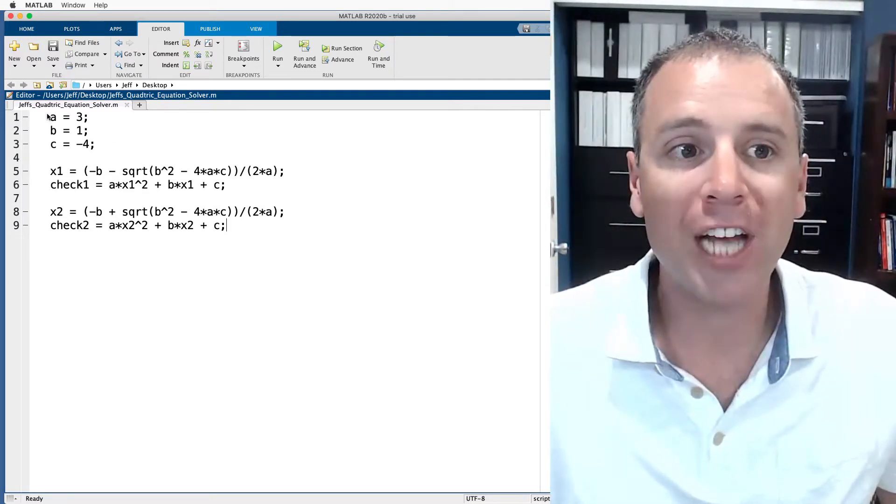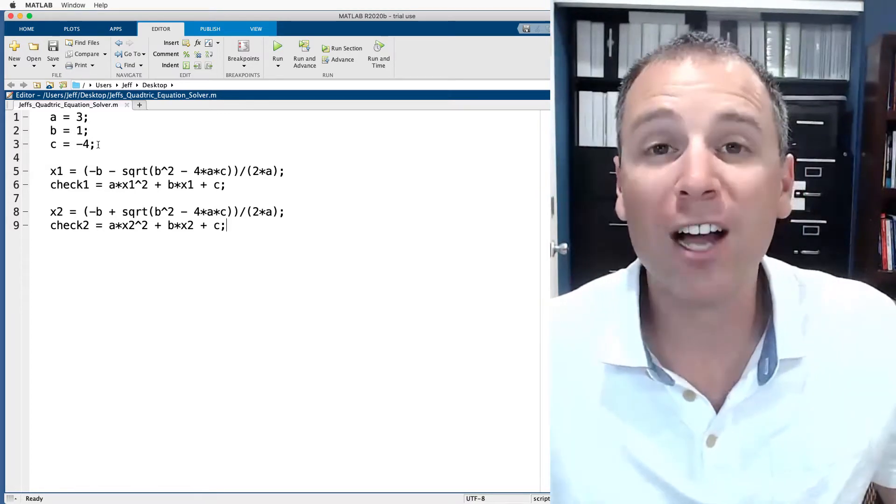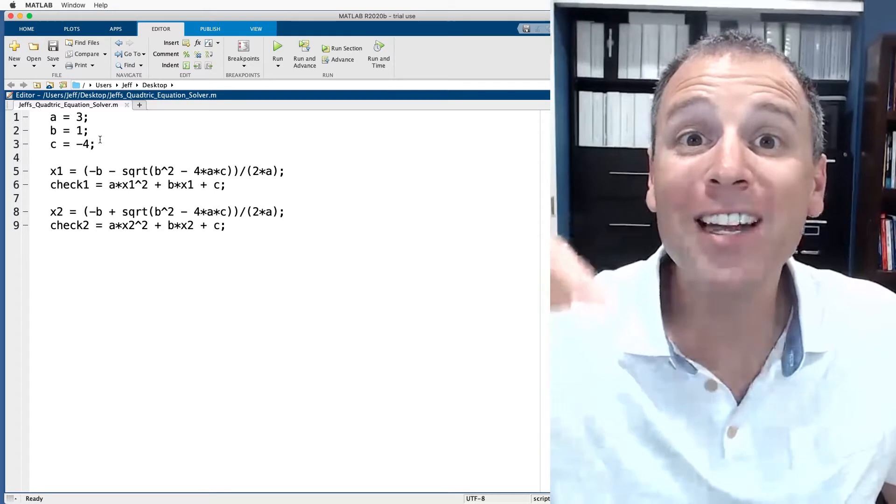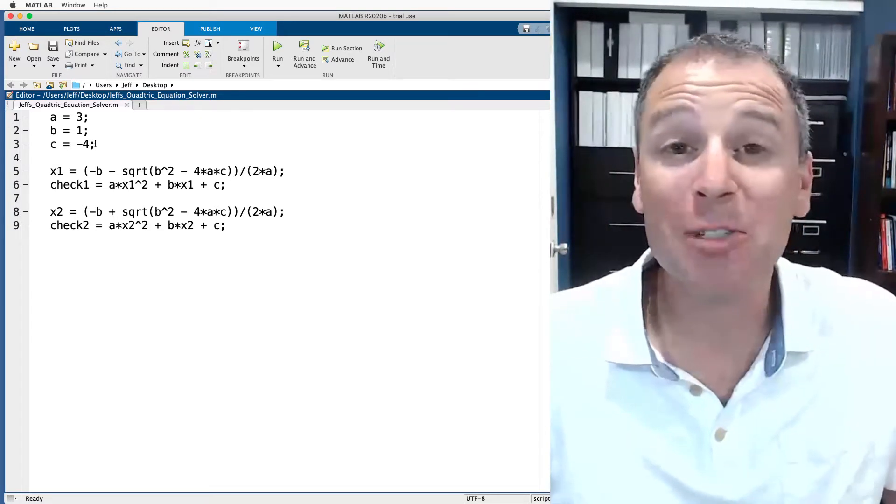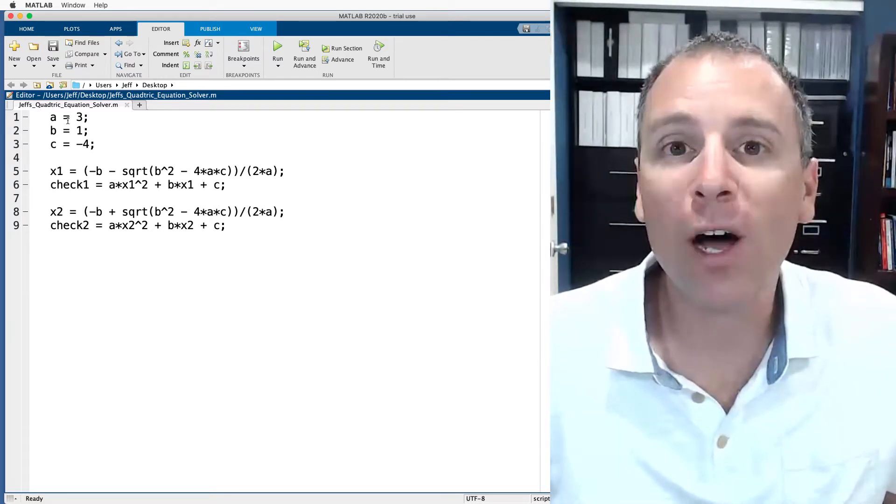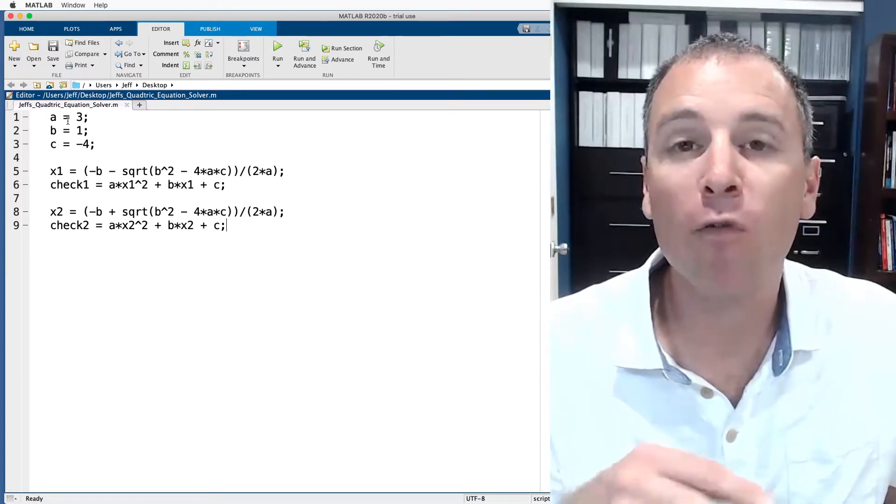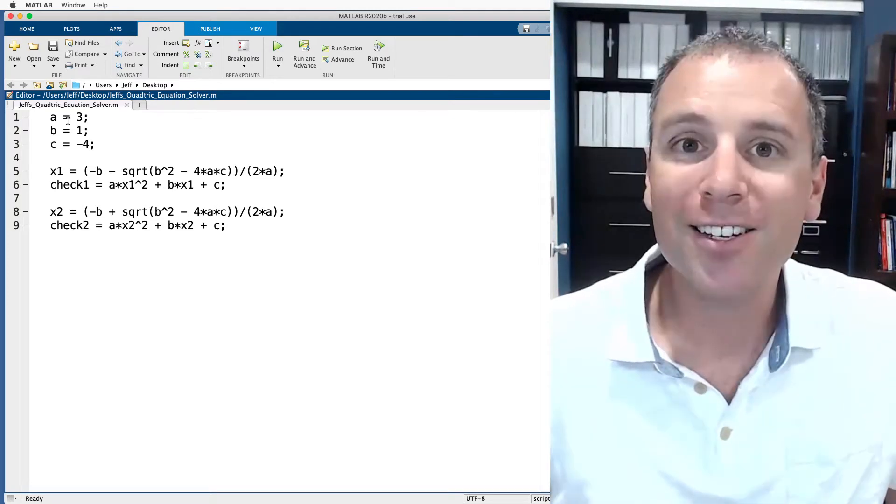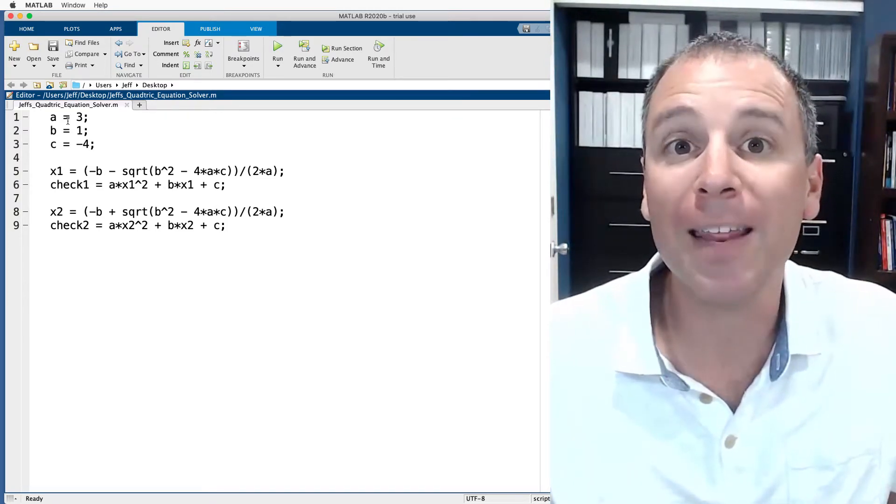Here we have a file called Jeff's quadratic equation solver. This script file we actually wrote in a different YouTube video. I'll make sure to link to that video in the description for this one. In that video I said that this was poorly written code and the reason for that is it is not well documented. What we're gonna do in this video is actually learn best practices for adding comments and documentation that makes code super readable for any other person that wants to use our code in their work.